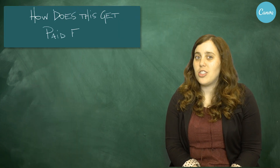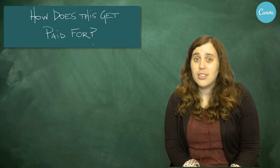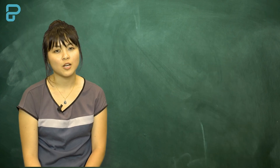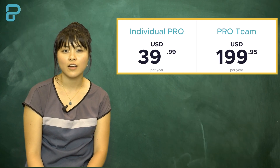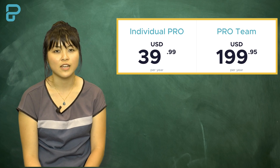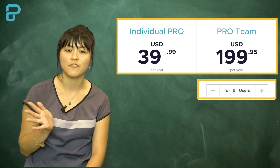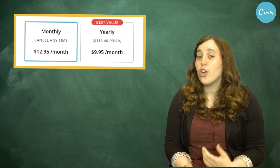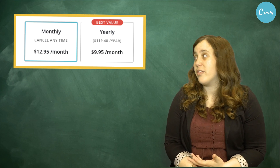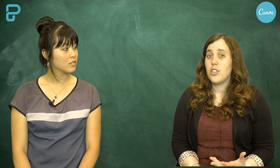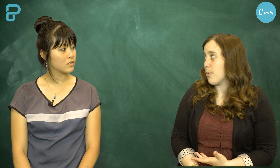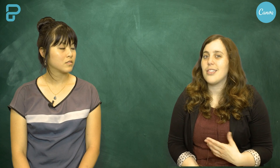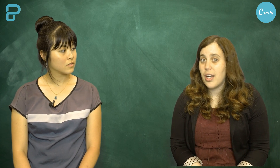PictoChart is a freemium model, which means you don't have to use real money to use it, but you're given more benefits and options if you do. It costs an educator $199 US to get the PictoChart account, and that gives you up to 5 members. Canva only costs $119 US dollars a year, or you can pay on a month-to-month basis at $12.95 US dollars a month. They're kind of similar as far as their payment structure goes, but Canva has the added bonus of being a little bit cheaper and they don't limit the amount of people you can have on your account.